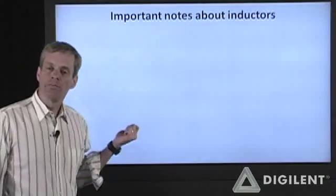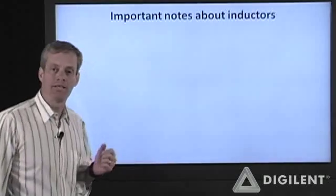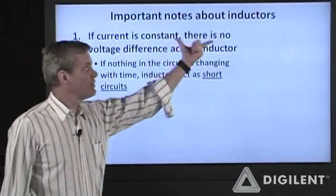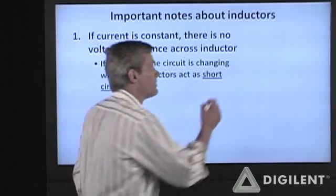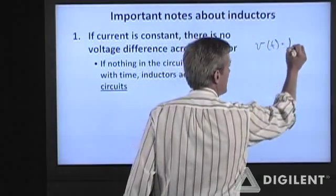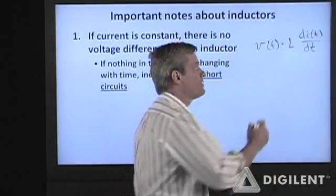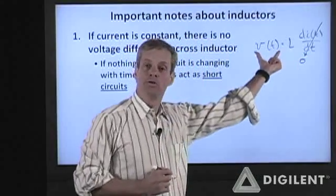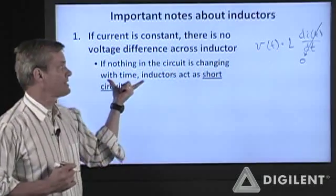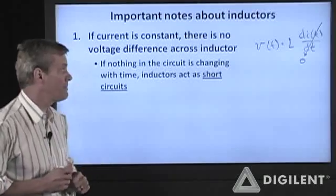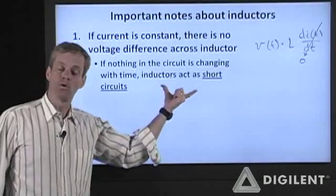I want to make a couple of quick notes about the characteristics of inductors and these are extremely important. We'll be using them a lot later when we're analyzing circuits. First, if the current is constant, then the inductor has no voltage difference across it. V(t) = L di(t)/dt. If the current is constant, the rate of change of current with time is zero and the voltage difference across an inductor is zero. That means that if everything in the circuit is constant, if nothing's changing with time, the inductor can be replaced with a short circuit and the circuit can be analyzed according to those rules.